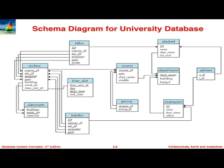We will be coming back to ER diagrams later. This is an actual relational schema with arrows being foreign key dependencies. Each box is a relation with the name of the relation at the top. Some of the attributes there are underlined. The underlined attributes are the primary keys. So all that is fairly standard notation.